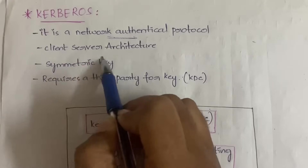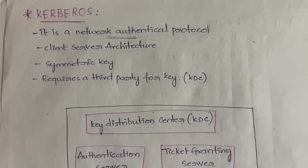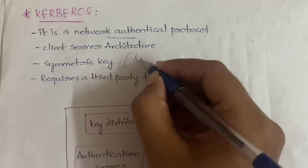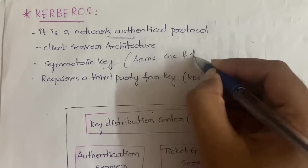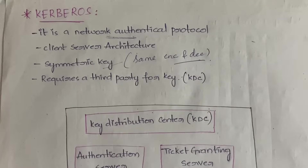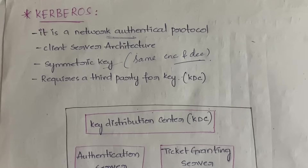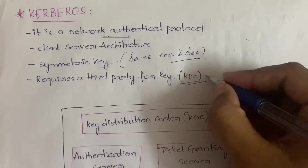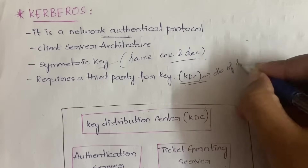Kerberos follows the concept of client-server architecture. Next, it follows the symmetric key algorithm, which means you will be using the same key for both encryption and decryption. Next, it requires a trusted third party (TTP) in order to provide the keys. That trusted third party is the KDC — the Key Distribution Center — which is essentially a database of all the secret keys.